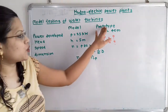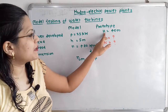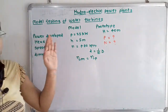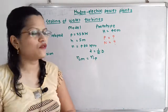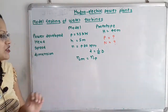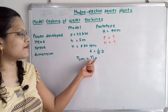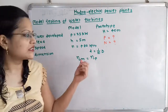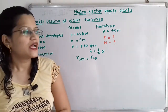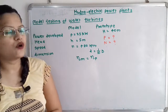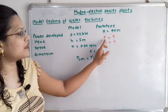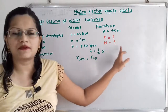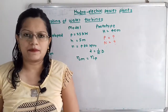For the prototype, it is given that capital H, the head, is equal to 40 meters, and the efficiency of the model is equal to the efficiency of the prototype. We have to find the power developed in the prototype as well as the speed in RPM for the prototype.